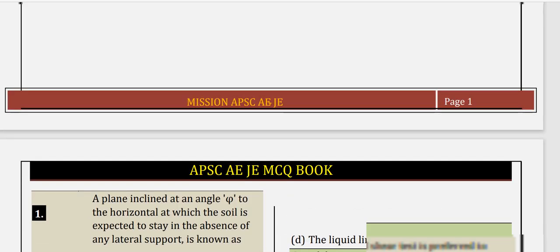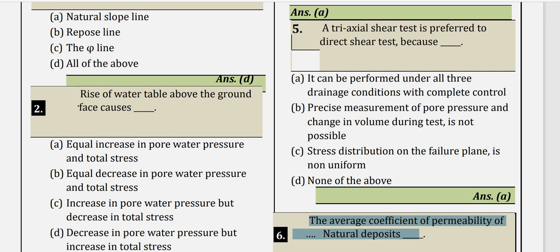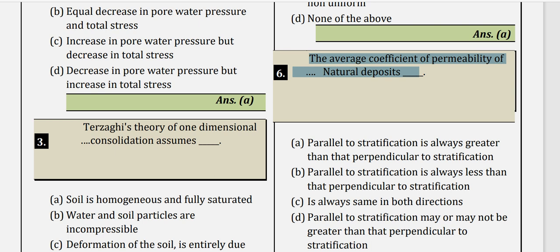Question 5: About the triaxial shear test. The main advantage of the triaxial test is that we can control the drainage conditions. It can be performed under all three drainage conditions: CD test, CU test, and UU test. Precise measurement of pore water pressure and volume change is possible. Also, the stress distribution on the failure plane is uniform in triaxial tests. So option A is correct.